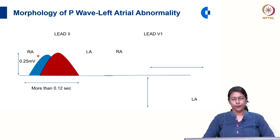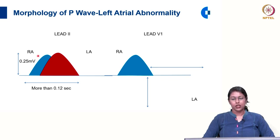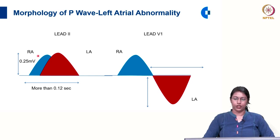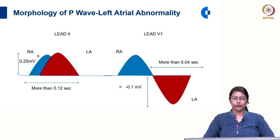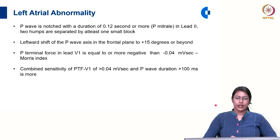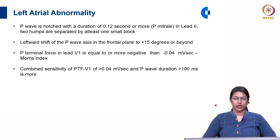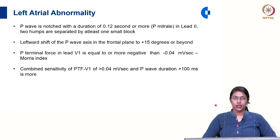In lead V1, the positive deflection contributed by the right atrium remains the same, whereas the negative deflection becomes deeper and broader — increased in both amplitude and duration. The amplitude will be more than 0.1 millivolt and the duration more than 0.04 second. In left atrial abnormality, the notched P wave with duration of 0.12 second or more is called P mitrale in lead 2, with the two humps separated by at least one small block, and there is a leftward shift in P wave axis to plus 15 degrees or beyond.